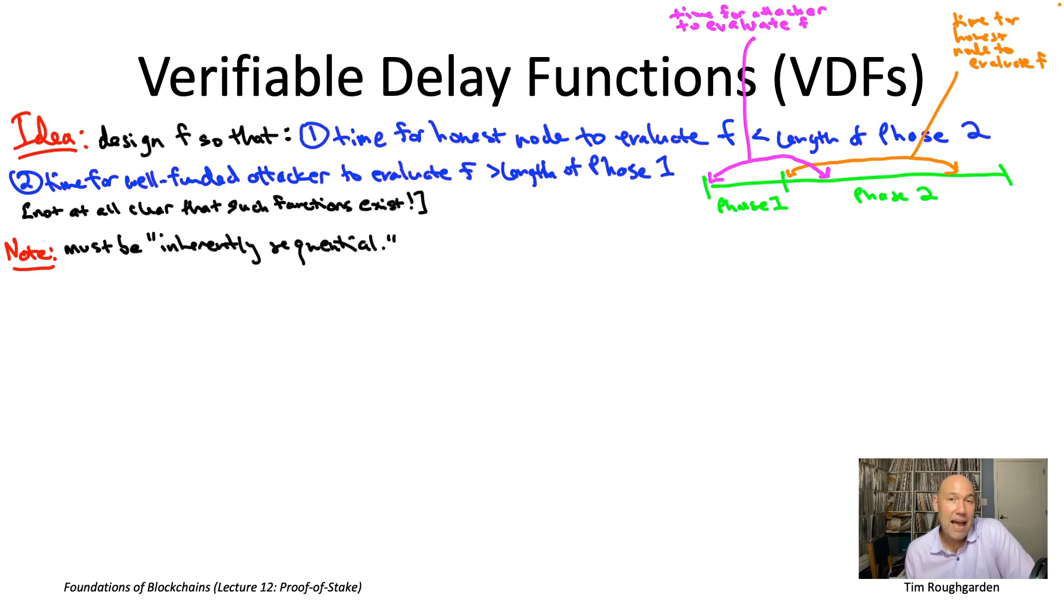Whereas we want to allow attackers that could buy a thousand or ten thousand machines. So if it was a function that allowed speed up through parallelism, then clearly you couldn't be a verifiable delay function. Then a well-funded attacker really could get a large speed up over what an honest node with a single machine could do.